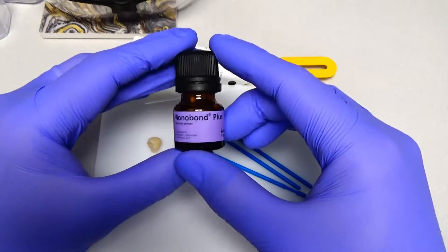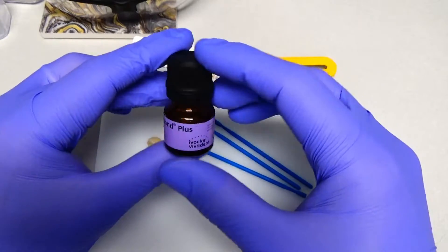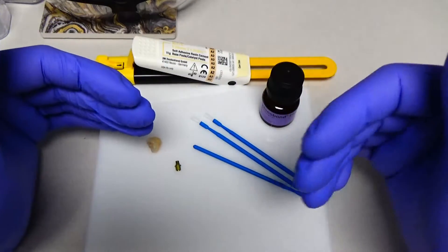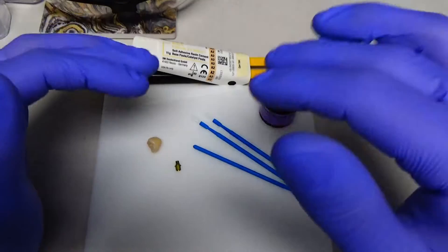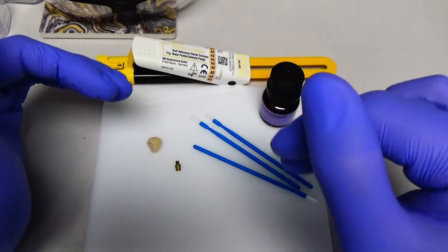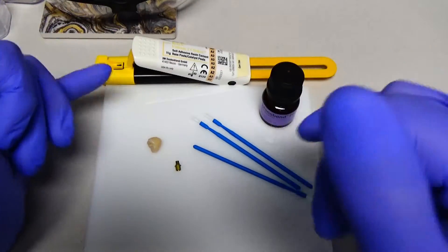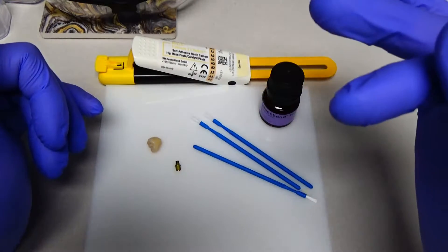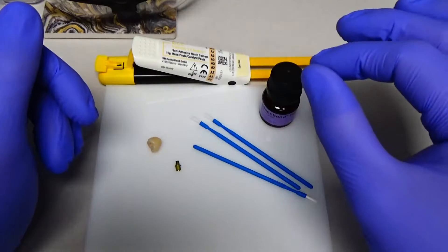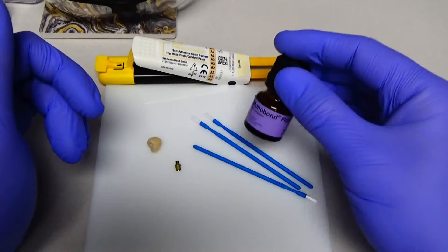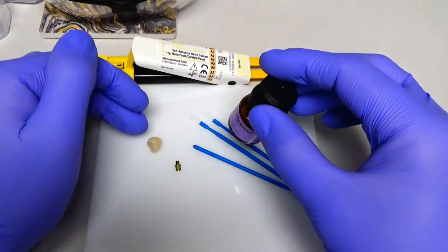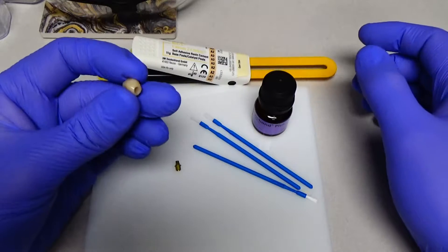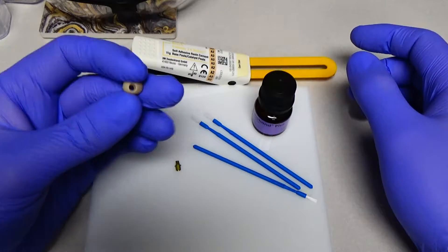And this is Monobond Plus. This is a really good product from Ivoclar. And Monobond Plus basically has everything that you need in it. It has the MDP particles, all sorts of different resin priming agents. So you can use this on composite, zirconia, lithium disilicate, metal, you can use it on everything. And that's the first thing to do is to use it on both of these substrates here in order to prime them for bonding. I've already airbrated the internal portion of the crown here.